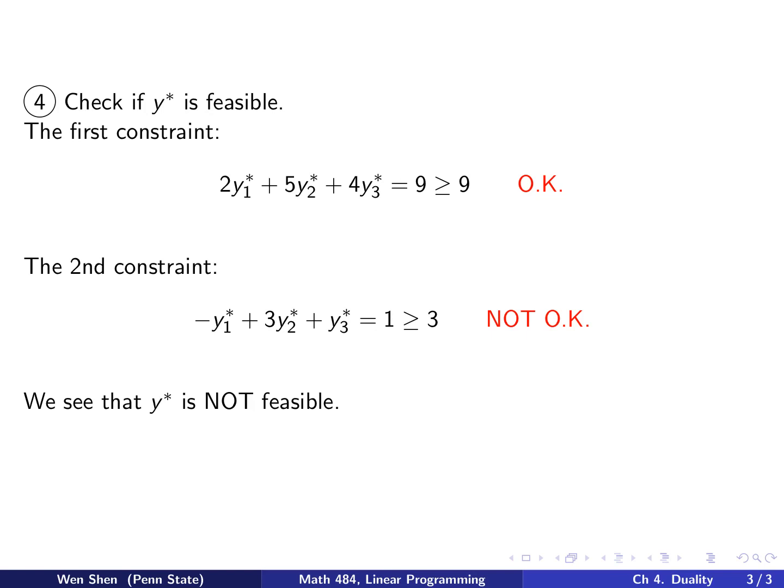If it's not feasible, can it be the optimal point? No. So y cannot be the optimal point, and therefore, the corresponding x star is not an optimal solution. So all that work, in the end, it failed.